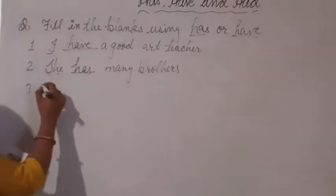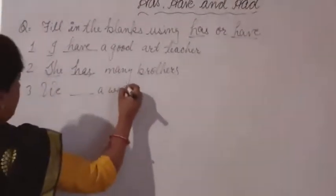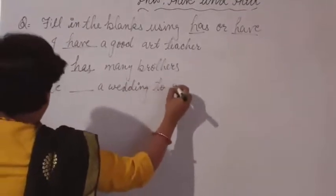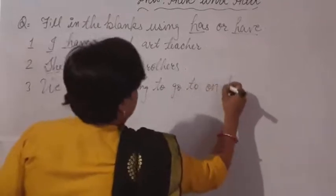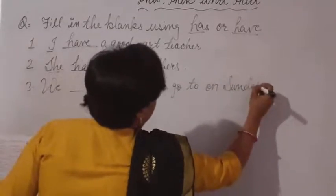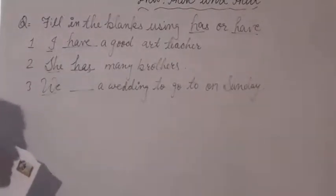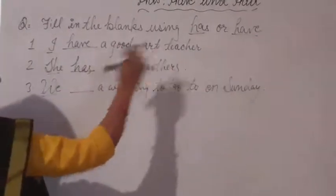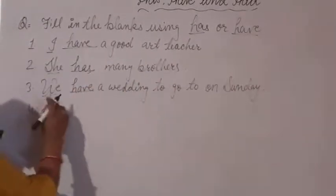Third: 'We have a wedding to go to on Sunday.' Here, we is the subject, and we is plural, so we use have.